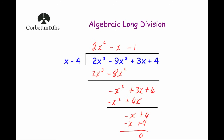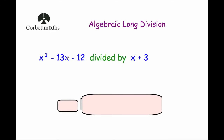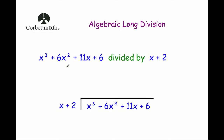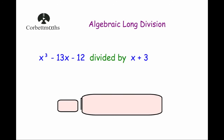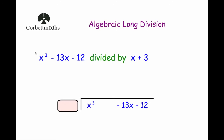Now the last example — I've made another subtle change to make it a bit harder. We're going to divide x cubed minus 13x minus 12 by x plus 3. This question is different because the x squared term is missing. Whenever you write it under the bus shelter, I recommend leaving a space and writing plus 0x squared as a placeholder, so the columns stay aligned when you do the multiplication.